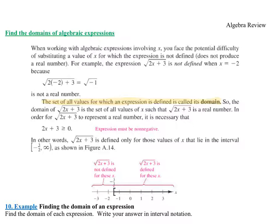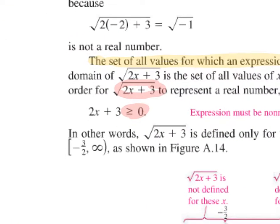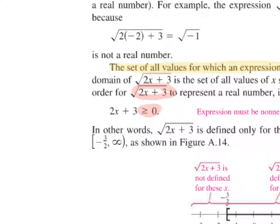The domain of √(2x + 3) is the set of all values of x such that √(2x + 3) is a real number — in other words, where it's defined. For this to represent a real number, whatever we are taking the square root of must be non-negative. So we solve the inequality 2x + 3 ≥ 0. Subtracting 3 from both sides gives 2x ≥ -3, then dividing both sides by 2 gives x ≥ -3/2.